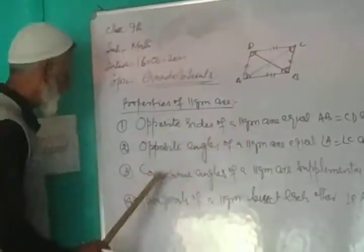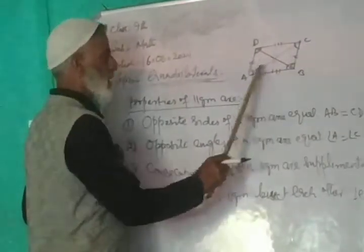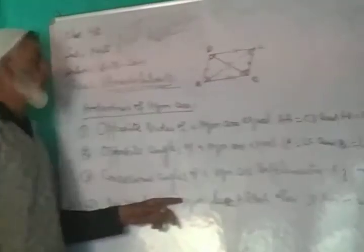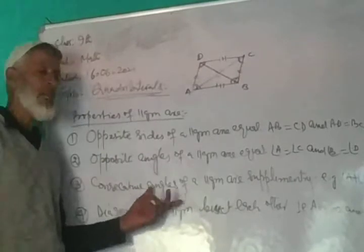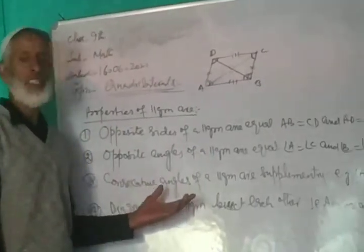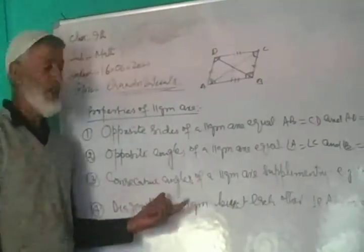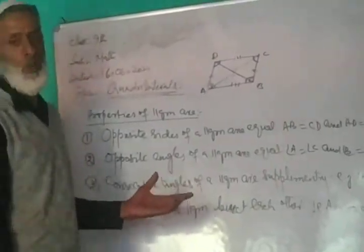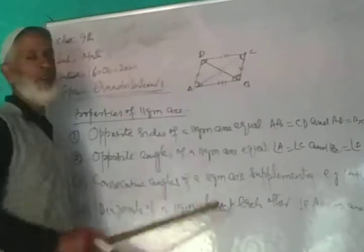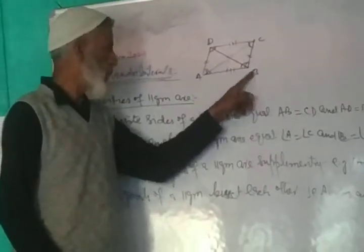The opposite sides are equal and the opposite angles are equal. The consecutive angles of a parallelogram sum to 180 degrees — they are supplementary angles, meaning two angles whose sum equals 180 degrees. The diagonals bisect each other: AO is equal to OC, and OB is equal to OD. Thank you very much.